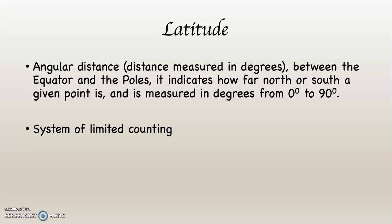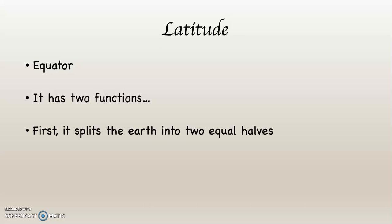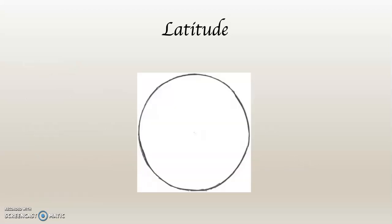Where do we start when we have a system of counting that goes from 0 to 90? We start at 0. With regard to latitude, you've heard of the equator. If you look at that word, this is a Latin word. If you look at it carefully, you can tell what it means. Of course, it means equal. The equator has two functions. First, it splits the Earth into two equal halves. Second, it's the starting point for latitudinal counting. Because of that, the equator gets a designation of 0 degrees latitude.